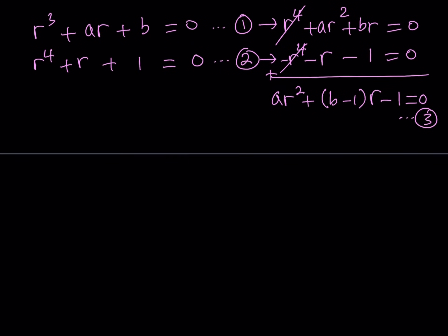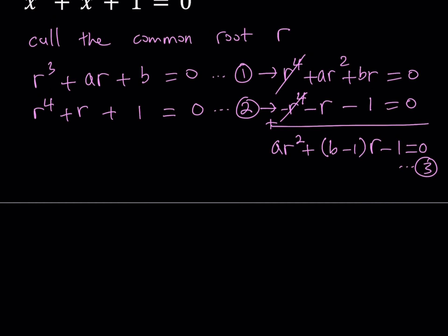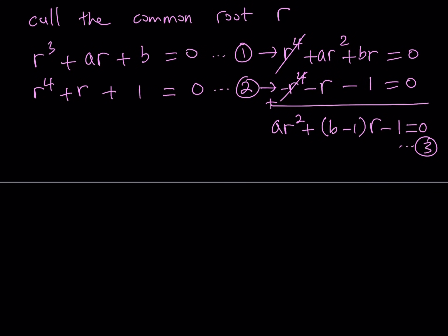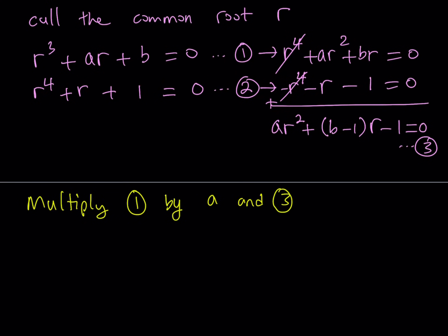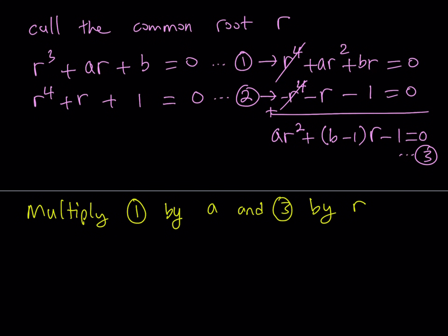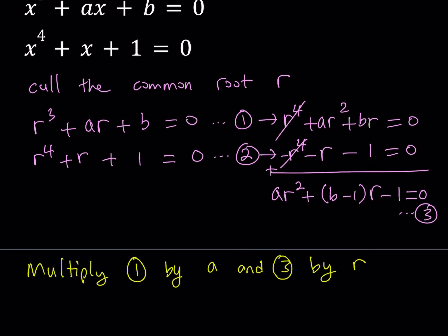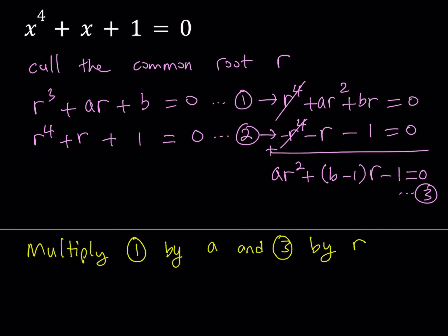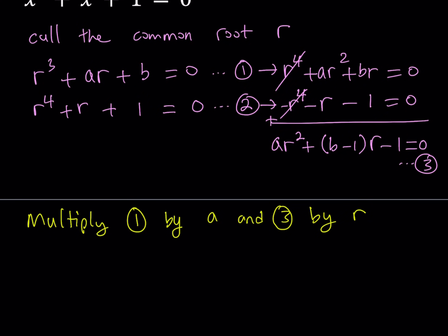The next step is to multiply equation 1 by A and equation 3 by R. The reason for this is that we'll be able to eliminate the R³ term by doing so. Equation 1 is R³ + AR + B = 0, so multiplying by A gives AR³ + A²R + AB = 0.